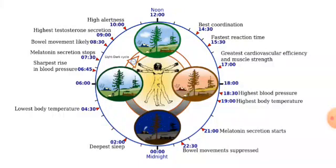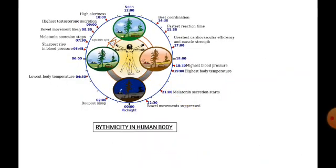But from after midnight to 6 am, when we are in deeper sleep, our body has its lowest temperature. After 6 am, when we are in a fresh condition, our body shows high alertness due to the sharpest rise in blood pressure. This is a good example of daily rhythmicity in the human body.